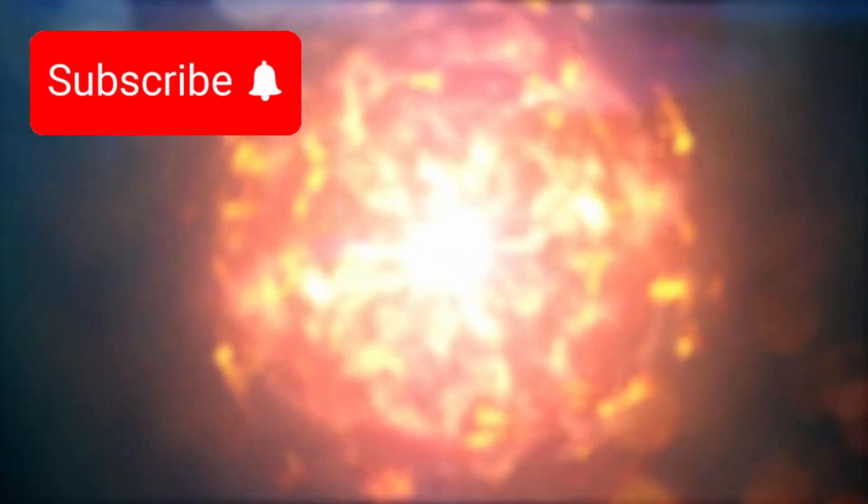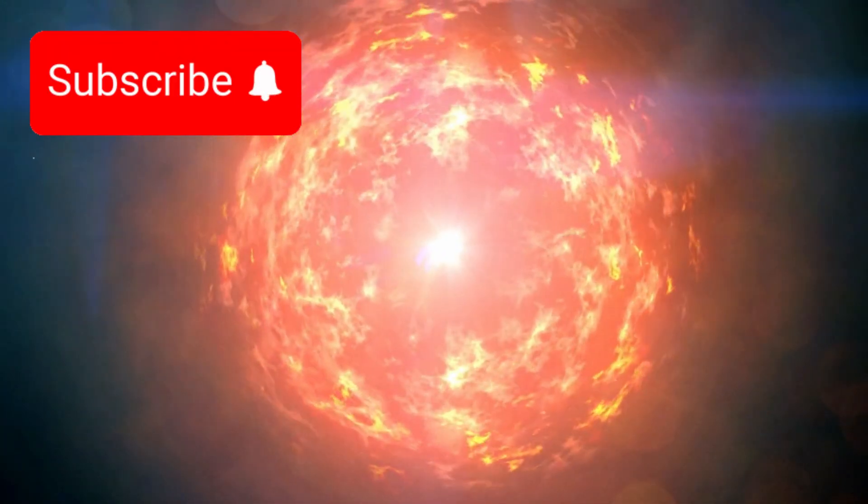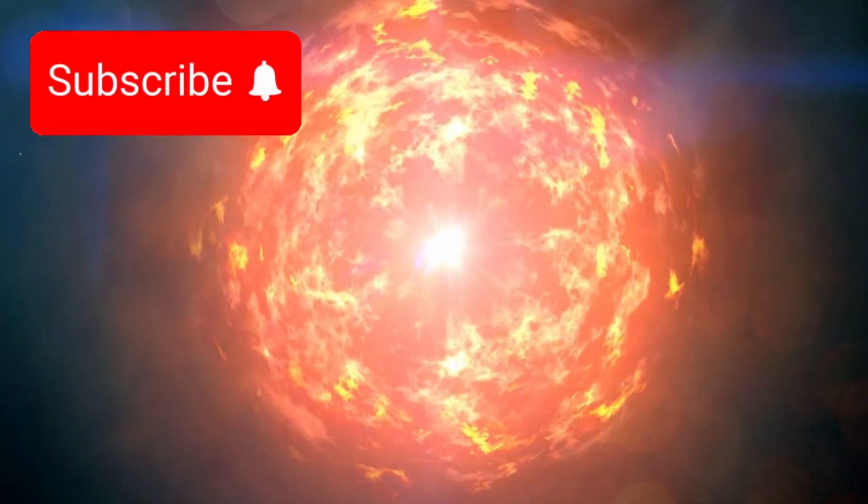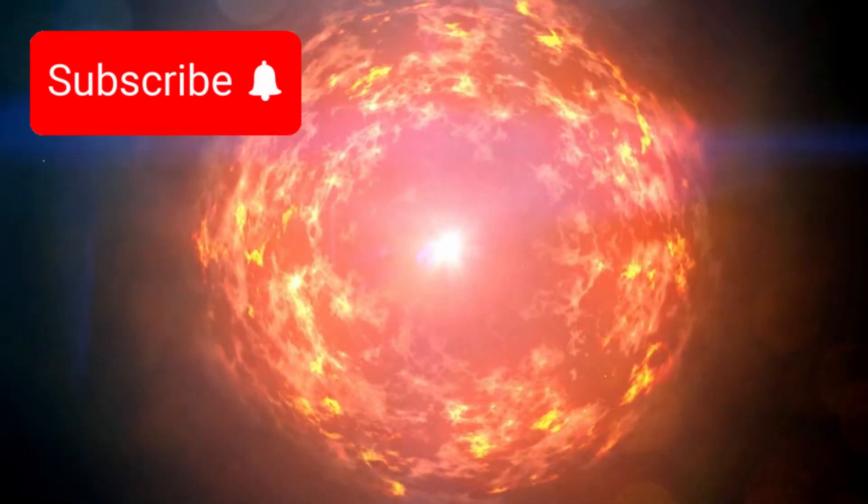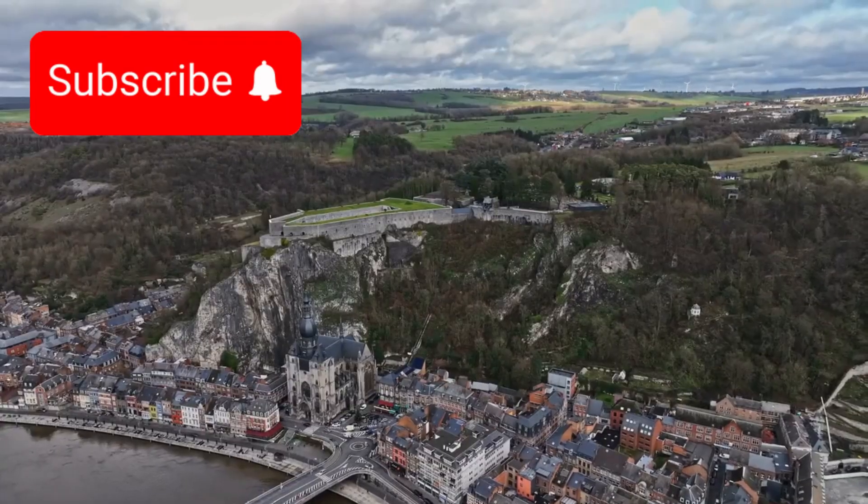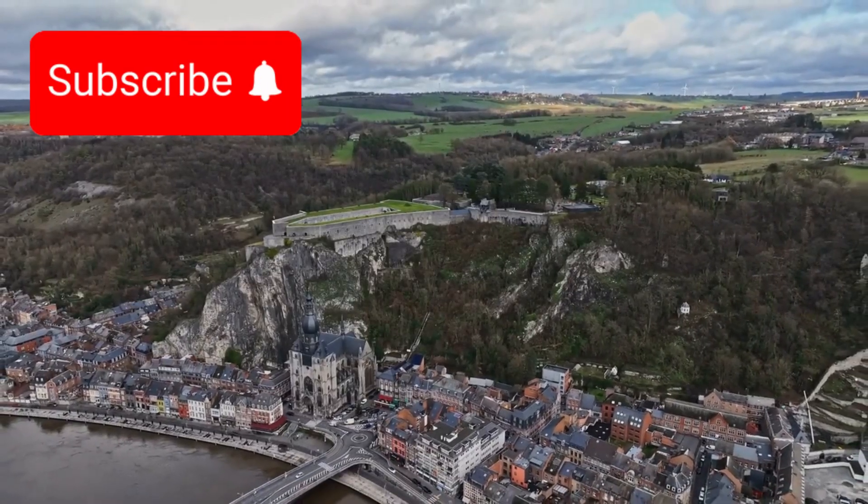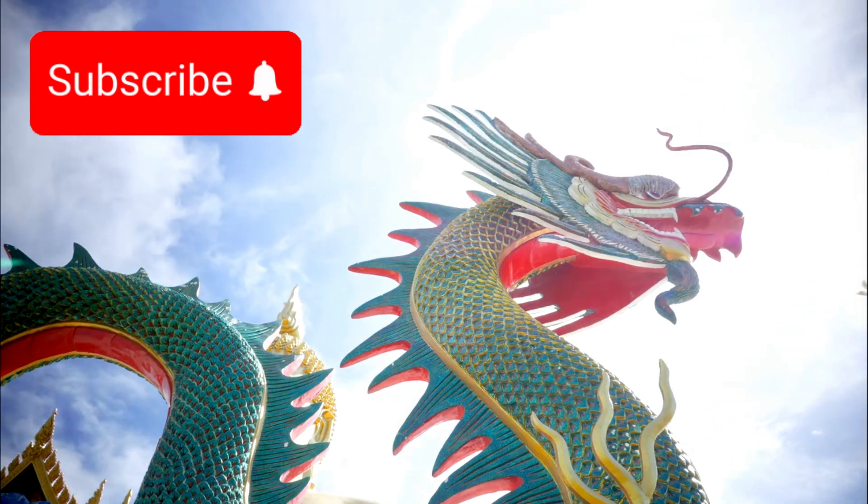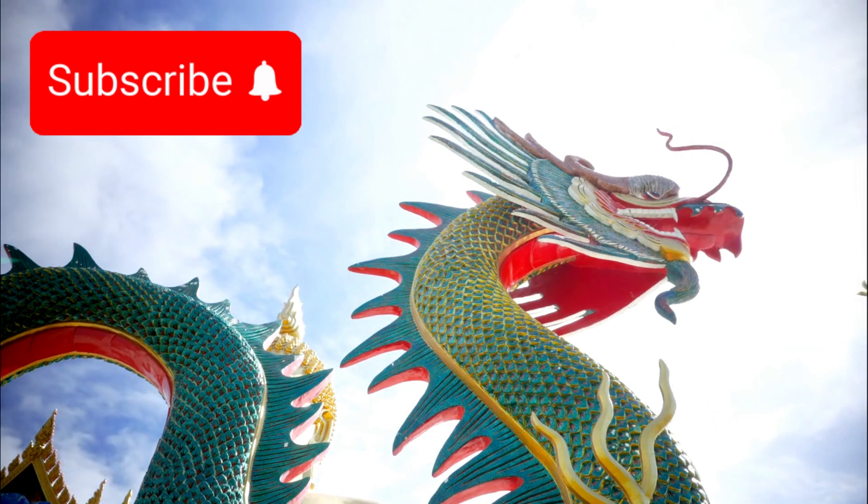When that happens, Betelgeuse will collapse under its own gravity and explode in a supernova, one of the most powerful events in the universe, unleashing as much energy as billions of suns. Historically, Betelgeuse has intrigued civilizations. Ancient astronomers in China once described it as yellow, suggesting it may have transitioned from a yellow supergiant to red, supporting the theory that it's entering its final evolutionary phase.